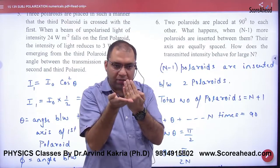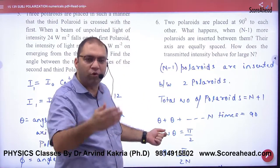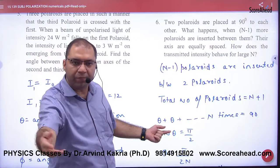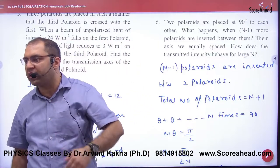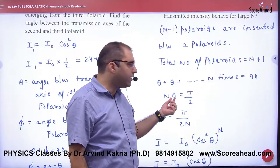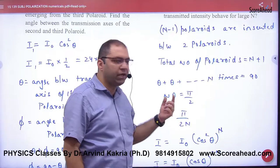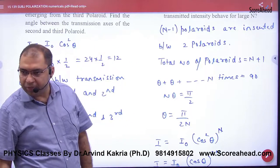So in the first and second, if the angle is theta, in the second and third theta, in the third and fourth theta, and in the end theta. So how many total angles? The first and the last total angle becomes 90. So by solving here, N times theta equals π/2. And theta equals π/2N. So equal spacing means theta equals π/2N.